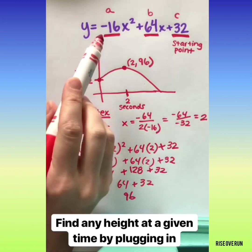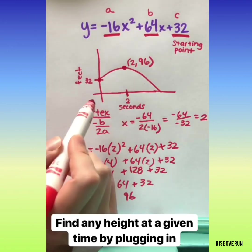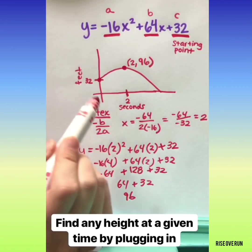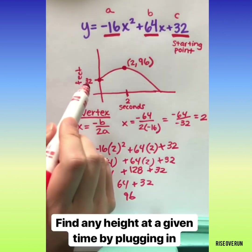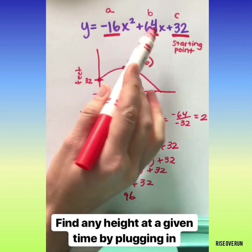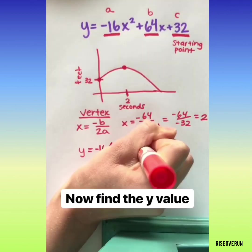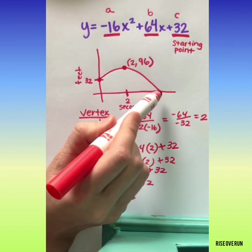Now I could find the height at any given second. If I want to know how high the ball is at one second, I just plug in a 1 for x. If I want to know the height at three seconds, I plug in a 3. And I could keep doing this and eventually find out when the ball hits the ground.